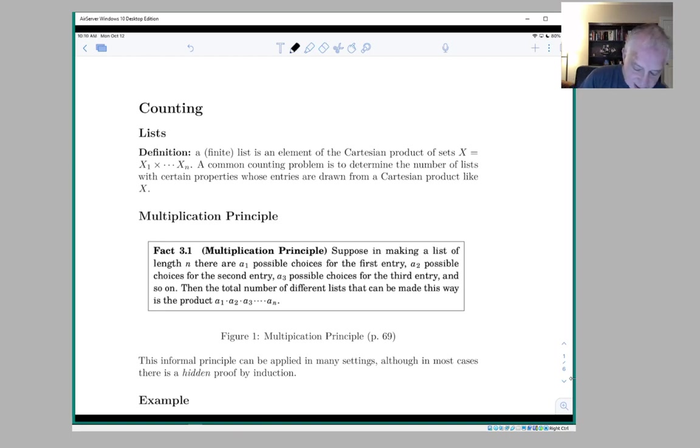Well, a list, maybe colloquially, is a collection of objects in a particular order, like me, you, Fred, Jan, and so on, up to Millie.